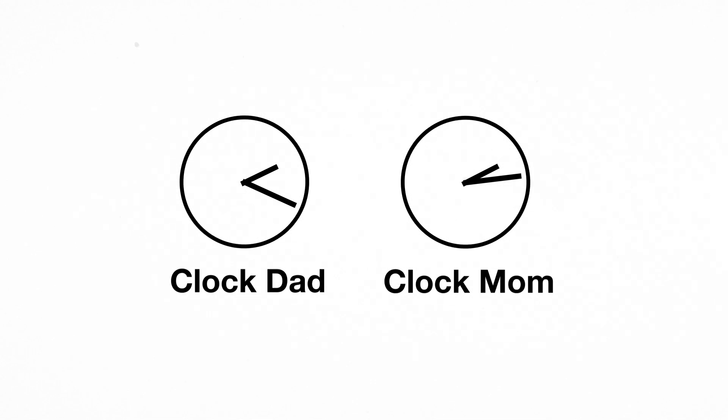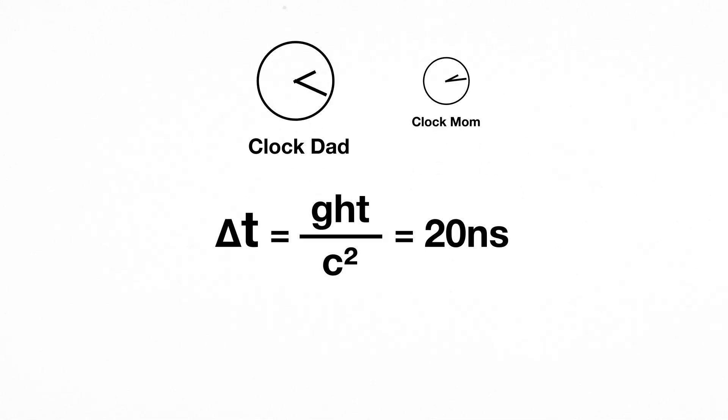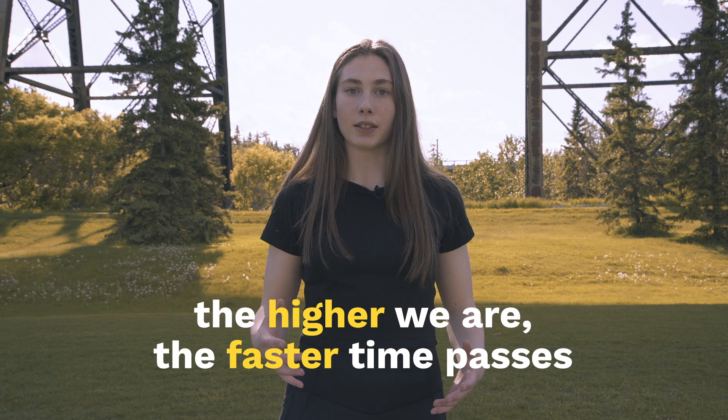The clock taken up the mountain was 20 nanoseconds ahead of the clock that remained at ground level. This difference is caused by gravitational time dilation. It proves that the higher we are, the faster time passes.